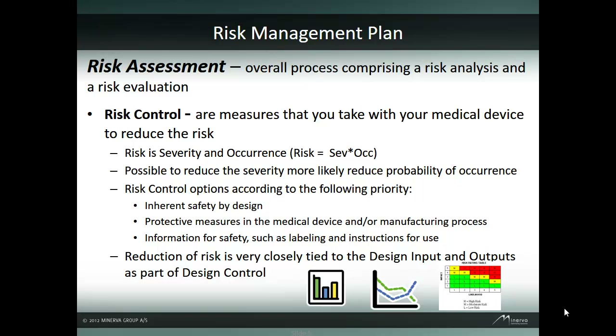Controlling risk should be done in accordance of priority: 1. Inherent safety by design — designing safety into the device. 2. Protective measures. 3. Labels and instructions. All three of these risk controls feed design inputs and will be manifested in the design output as part of the design control.